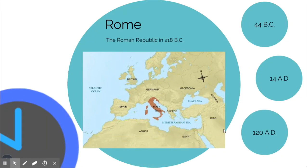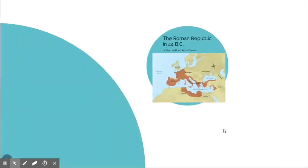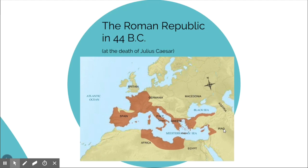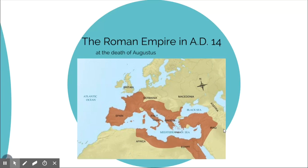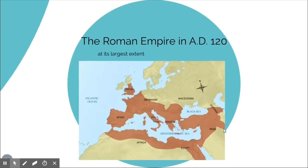Here's how it started: in 218 BC, about 500 years after it began. At the time of Julius Caesar, the Roman Republic had grown, and by 44 BC — the death of Julius Caesar — it had encompassed even more. By AD 14 it had conquered most of Egypt, much of what was Mesopotamia, and Spain. At its largest extent in AD 120, it encompassed Britain, Assyria, and most of Africa.